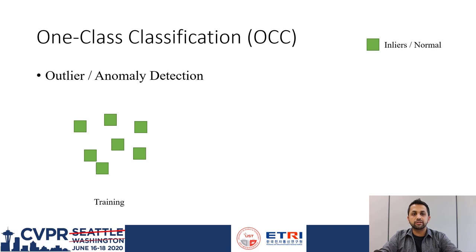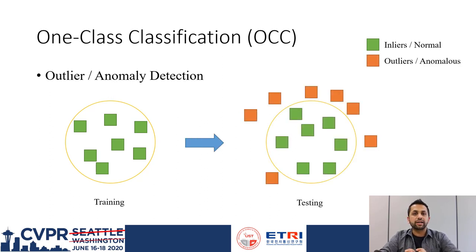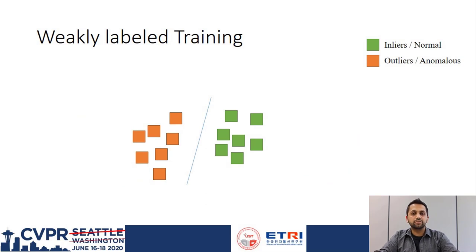Given the intuition that normal data is abundant and relatively easier to obtain, several researchers proposed one-class classification networks. In such frameworks, the classification boundary is learned using only normal data, and during test time, any new data falling outside this boundary is flagged as anomalous. However, a fundamental problem is that if the boundary is too tight around the normal data, a new normal data point which may be slightly deviant from the learned representations will also be flagged as anomalous. Another protocol for anomaly detection is to utilize both normal and anomalous examples for training, but to mitigate the necessity of obtaining fine-grained annotations, weakly-labeled training is preferred.